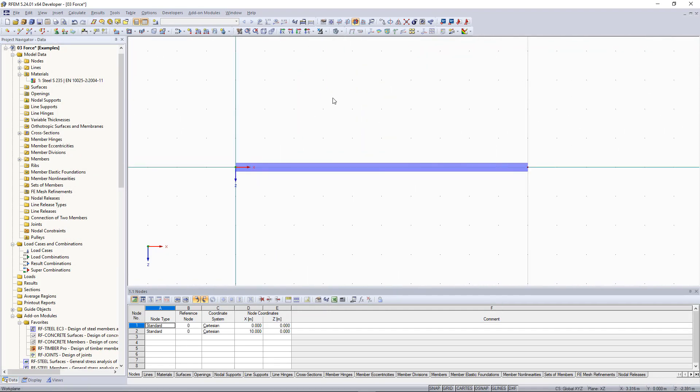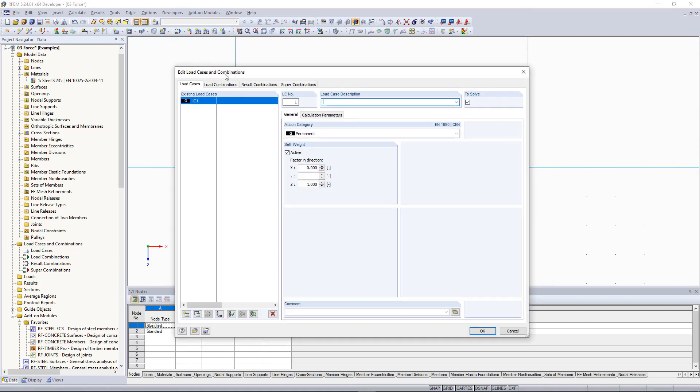To view the self-weight, we first need to create a load case. Create a new load case by clicking the button in the toolbar. It is important here that the self-weight is activated.